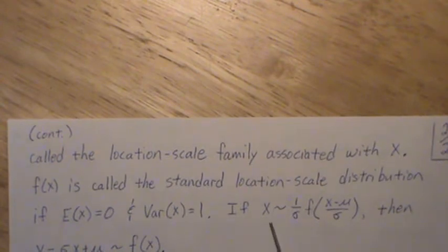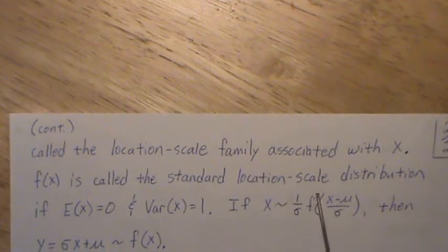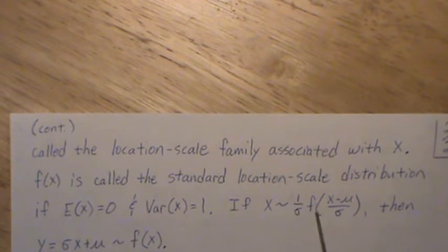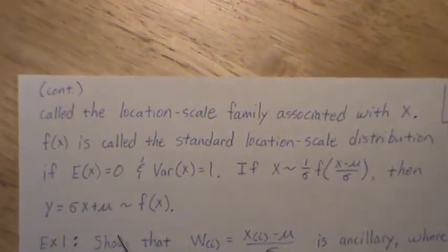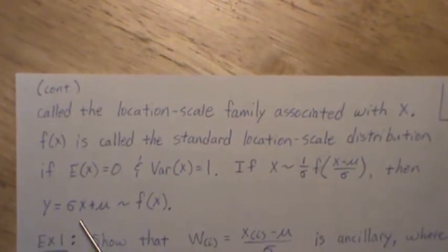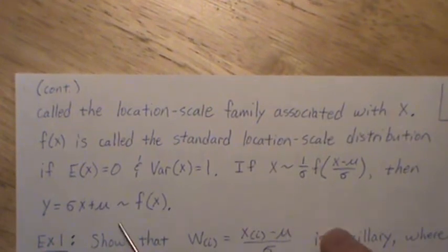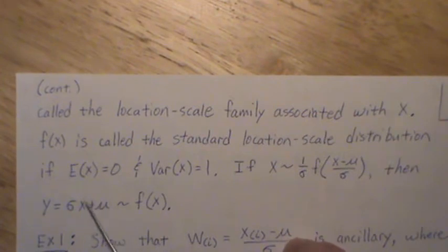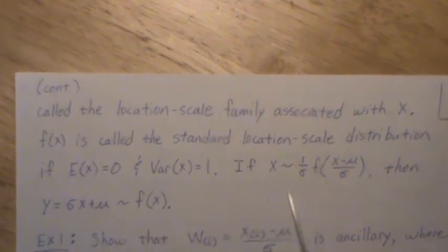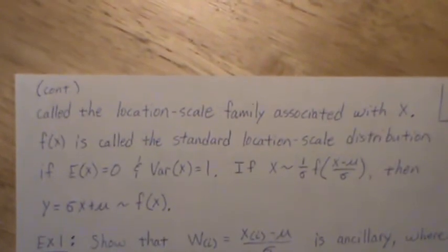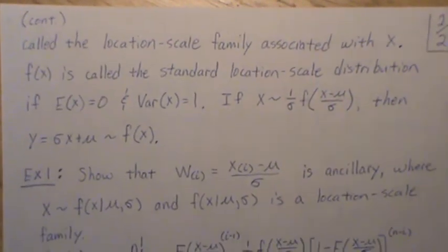Now, if X is distributed with some location scale distribution, then you can kind of go backwards. You can multiply it times the variance or the sigma and add the mean, and then it goes back to F of X, so where there's no parameters, if this is a true location scale family.